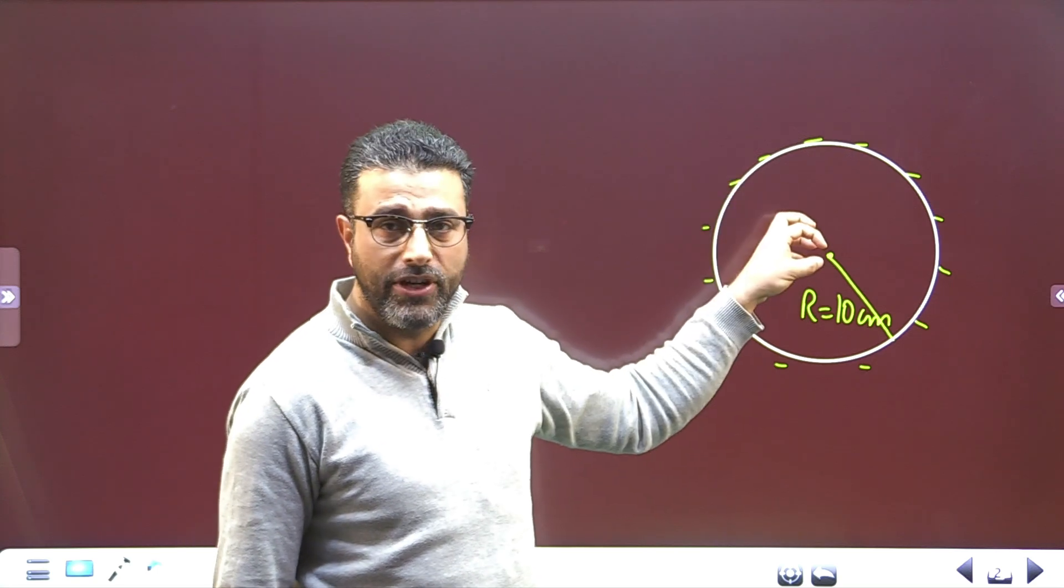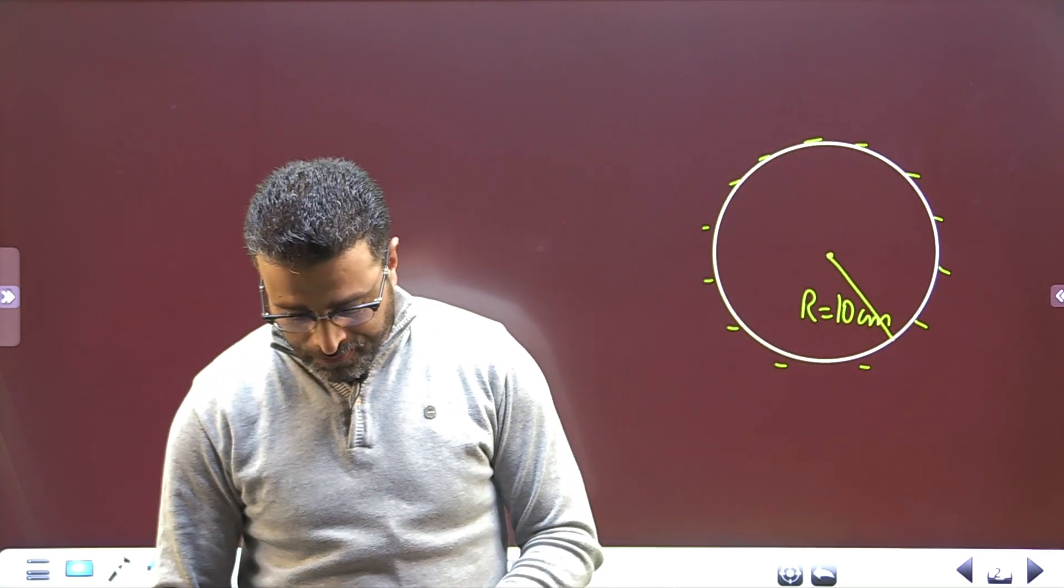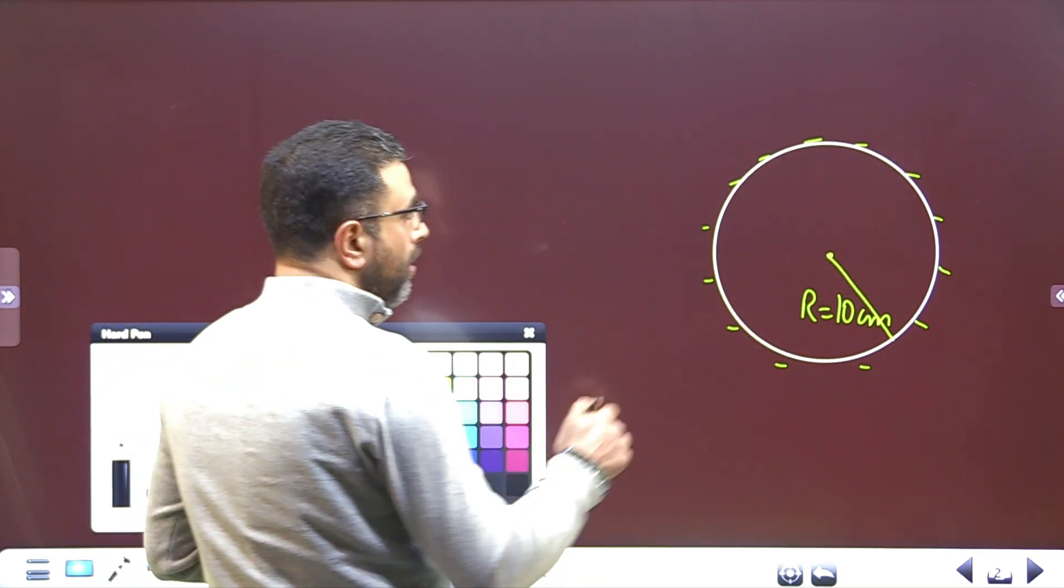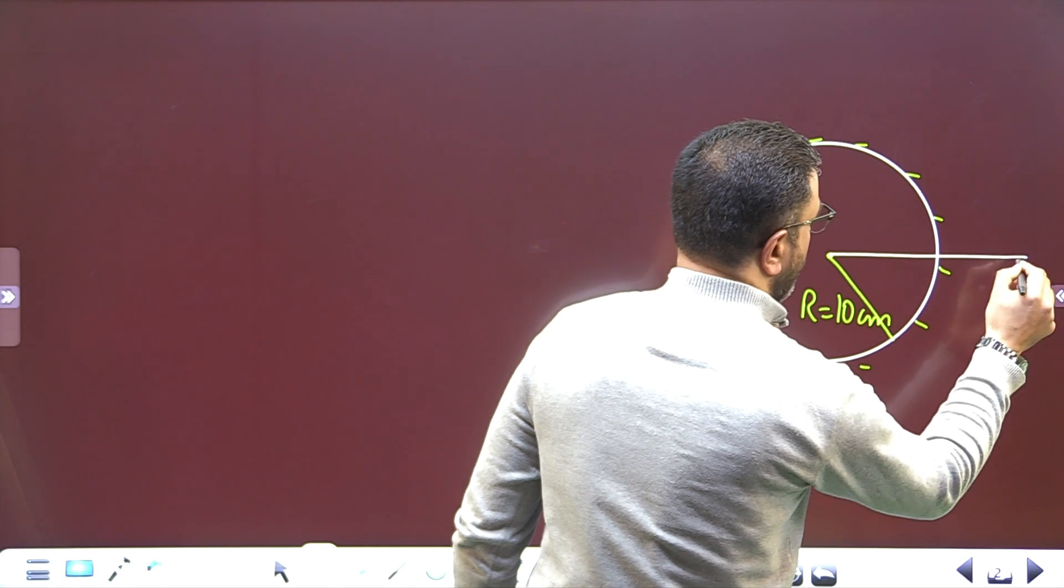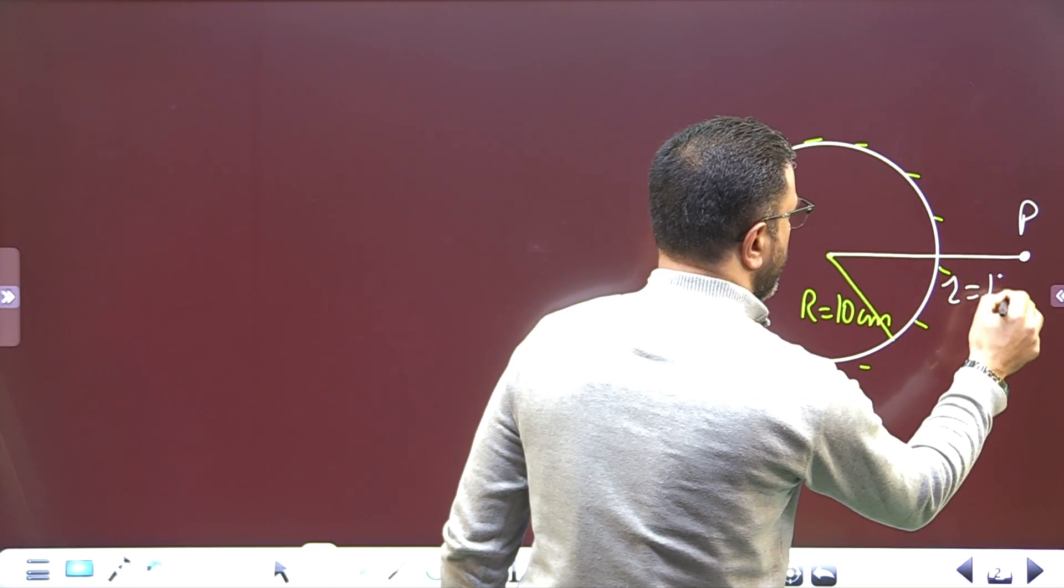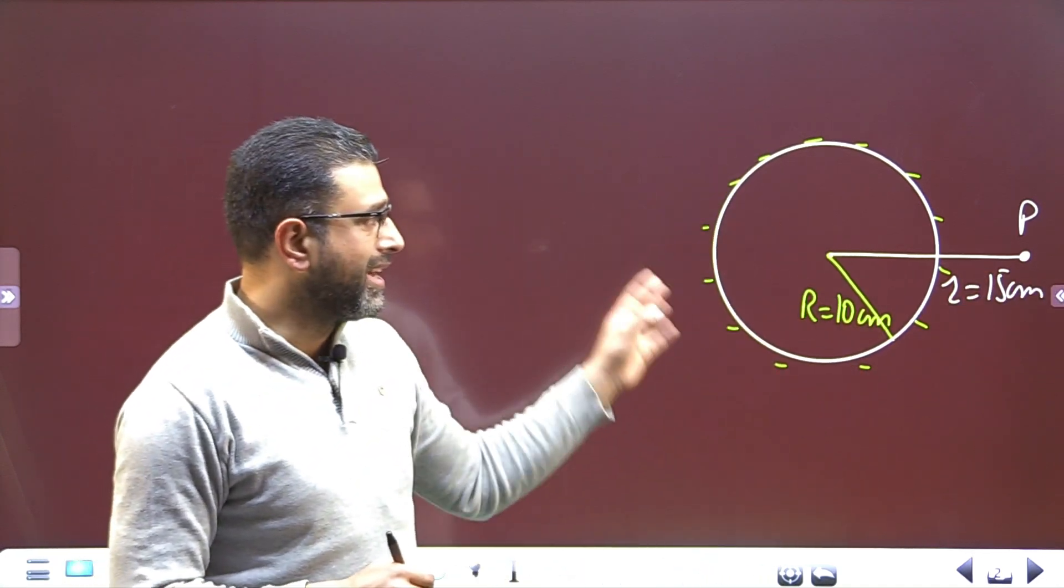But this is a conductor, so charges are free to move. They all go to the surface because of the mutual repulsions. Now we are given a point at a distance of 15 centimeters - point P, suppose, at a distance r = 15 centimeters.